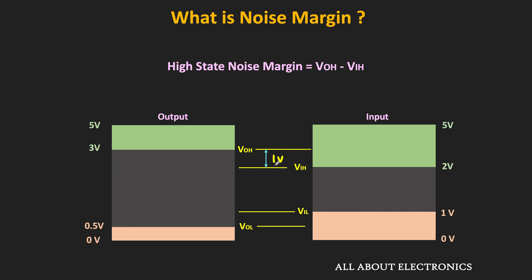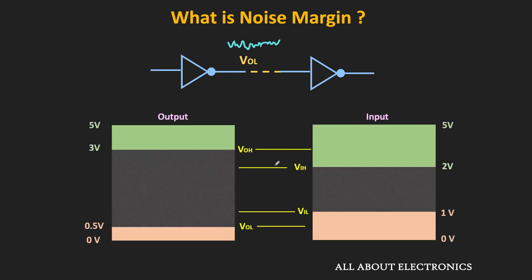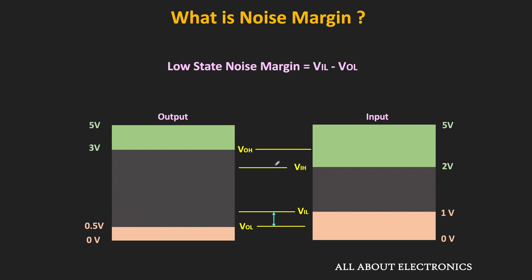Similarly, we will also have the noise margin when the output of the logic gate is equal to low. In the same example, let's say the output of the first gate is equal to logic 0, and its output voltage is equal to VOL. So if there is additional noise on top of this output voltage, then because of that, the output voltage can go beyond the VIL limit. And if that happens, then the second gate will not recognize the input as logic 0. As you can see, VOL is equal to 0.5V while VIL is equal to 1V, which means we have a margin of 0.5V. So for the low voltage levels, the noise margin is equal to 0.5V — that is the difference between VIL and VOL.